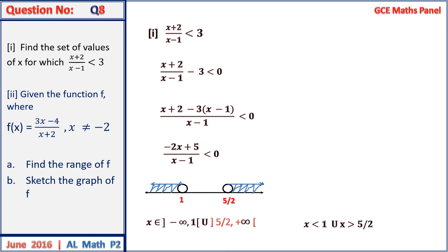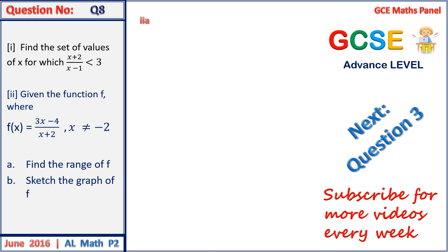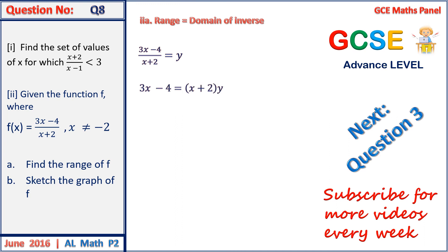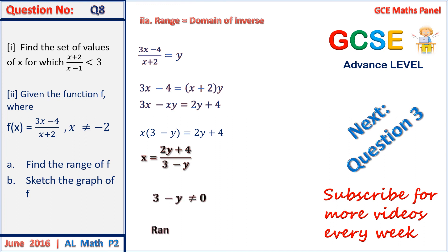The solution can also be written as x strictly less than 1 union x strictly greater than 5 on 2. For the next part, we are given a function and asked for its range. The range of a function is the domain of its inverse, so we make x the subject: 3x minus 4 equals x plus 2 times y, giving x equals 2y plus 4 on 3 minus y. This inverse function is defined when y is not equal to 3, so the range of the function is all real numbers excluding 3.